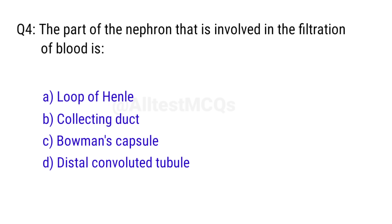Q4. The part of the nephron that is involved in the filtration of blood is? The right answer is option C, Bowman's capsule.